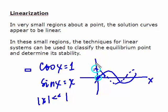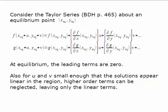So that's what we're going to do. We're going to select these equilibrium points and look in a region very close to them. We start with the Taylor series about the equilibrium point. We'll write a Taylor series about it, assuming that u and v are very small distances — so x_eq + u and y_eq + v gives a very small region about the equilibrium value.